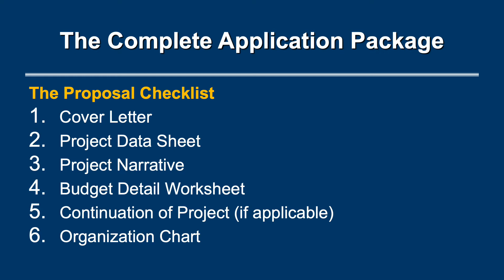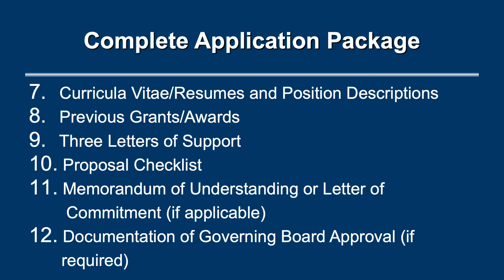There are 12 documents listed on the proposal checklist: 1. The cover letter, 2. The project data sheet, 3. The project narrative, 4. The budget detail worksheet, 5. The continuation of project, 6. The organization chart, 7. The CV, resumes, or position descriptions, 8. Previous grants or awards, 9. Three letters of support, 10. The proposal checklist, 11. The memorandum of understanding or letter of commitment, 12. Documentation of governing board approval.